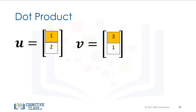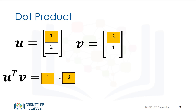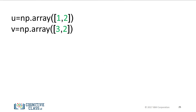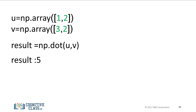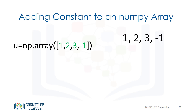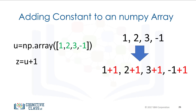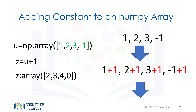The dot product is another widely used operation in data science. The dot product is a single number that represents how similar two vectors are. We multiply the first components of u and v, then multiply the second components and add the results together. We can perform the dot product using the NumPy function dot and assign it to the variable result. If we add a scalar value to a NumPy array, NumPy will add that value to each element — this property is known as broadcasting.